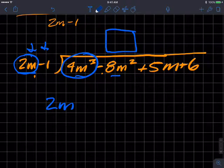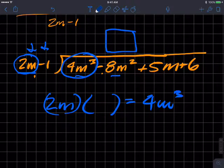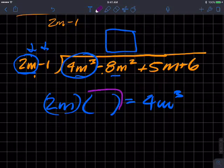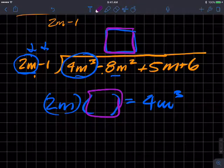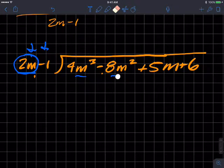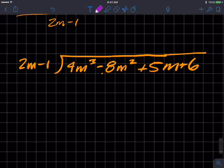In other words, 2m times what would make 4m cubed, whatever that value is, whatever that value is, is going to go in right here. Okay. So hopefully we're seeing that it would be 2m squared. So 2m squared, let's get rid of some of this stuff here because it's getting too crowded. 2m squared, 2m squared, 2m squared. So 2m squared.